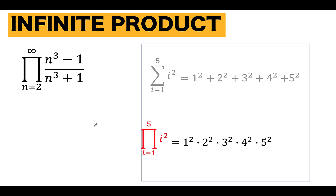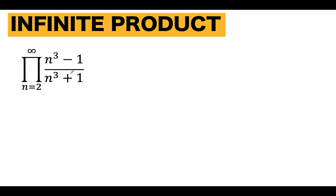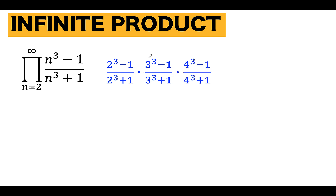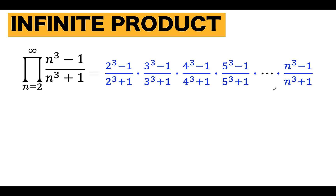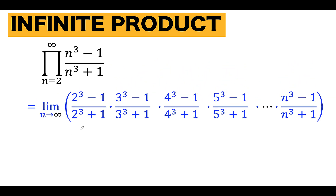Going back to our problem, how do you find this infinite product? To get an idea, let's take n equals 2: this becomes 2 cubed minus 1 over 2 cubed plus 1. When n equals 3, that is 3 cubed minus 1 over 3 cubed plus 1, and we are getting the product. For n equals 4 and n equals 5, we continue multiplying, going until n approaches infinity. Therefore, this is a limit problem — we want to find the limit of this sequence of products as n approaches infinity.